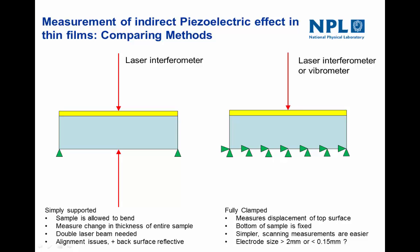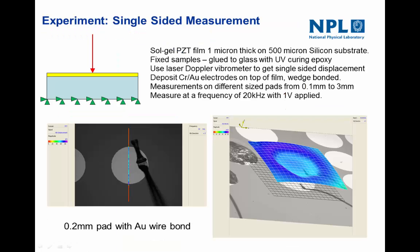To summarize the two practical methods: on the left we have the double beam system where the sample is simply supported at the edges, allowed to bend, and the change in thickness of the entire sample is measured with a double beam laser — though alignment issues exist and the back surface must be reflective. The other method uses a single beam laser interferometer or vibrometer measuring top surface displacement, with the back surface completely fixed. With the single beam system, scanning is easy, but there is disagreement: some say electrode sizes of two millimeters or larger are needed, while others say smaller than 150 microns.